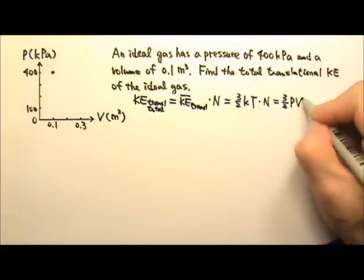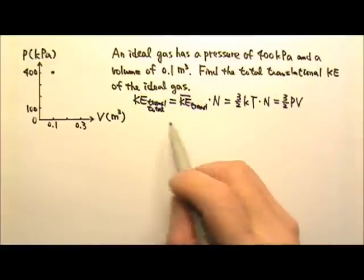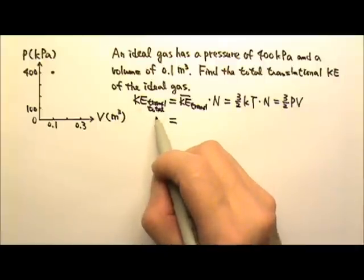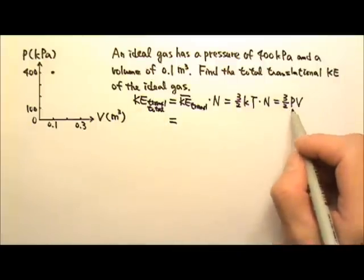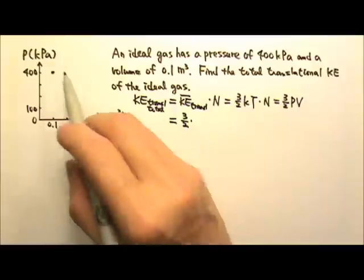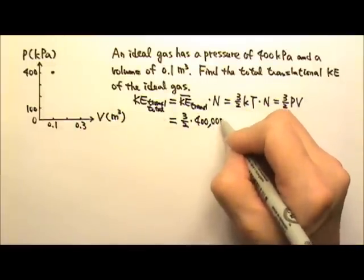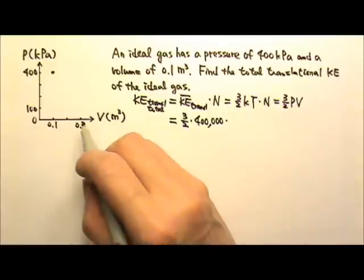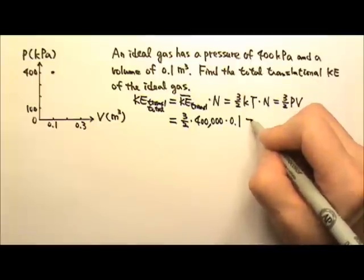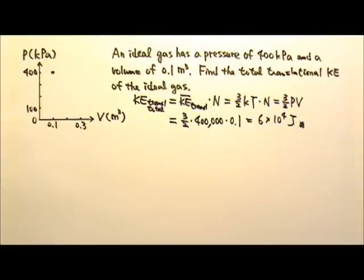So the total translational kinetic energy is (3/2)PV, because we have pressure and volume. To get the answer in the standard unit of joules, we need everything in standard units. So this will be (3/2) times 400,000 pascals times 0.1 cubic meter, which gives us 6×10⁴ joules. That's the total translational kinetic energy.